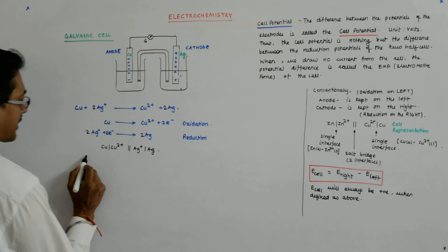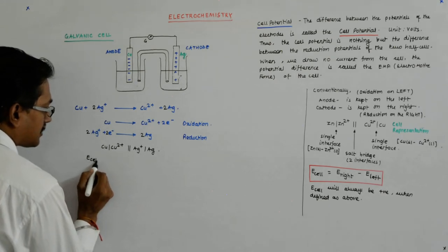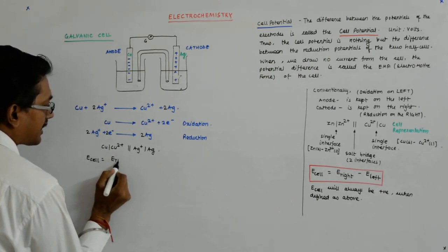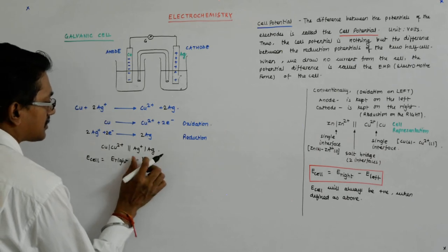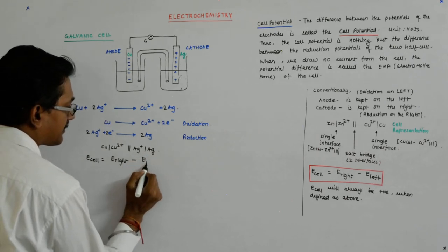Now what happens? How do I write E cell? E cell is nothing but E right minus E left.